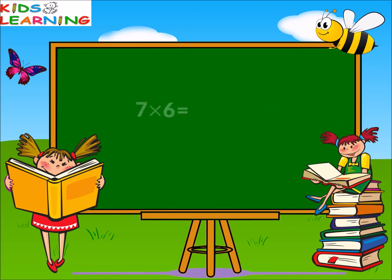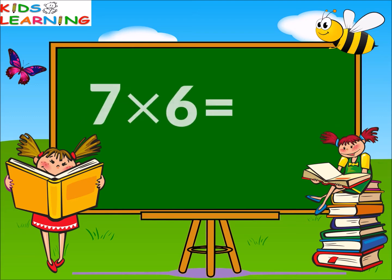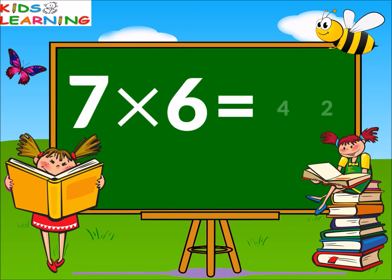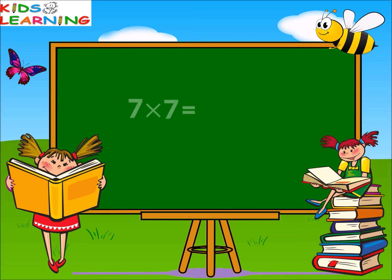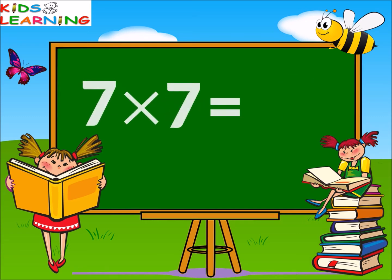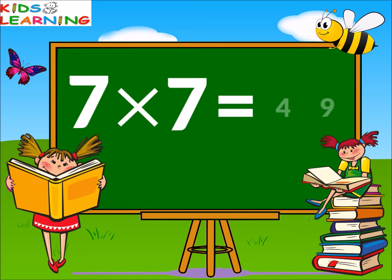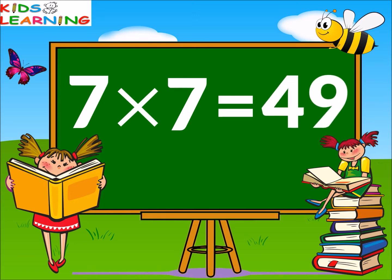Seven sixes are forty-two. Seven sevens are forty-nine.